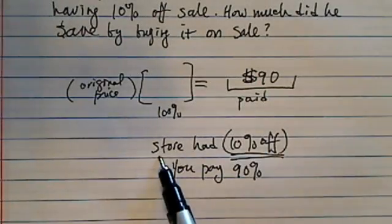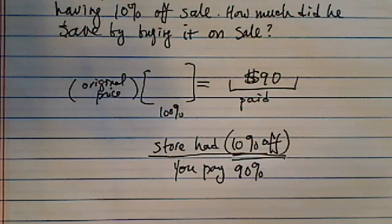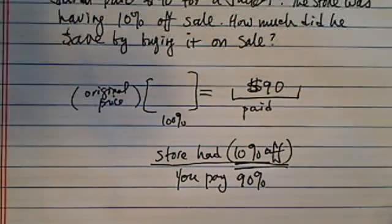So think about this one. If store has 10% off, basically they're saying they're taking 10% and they're paying 10% for you and you pay the 90%.